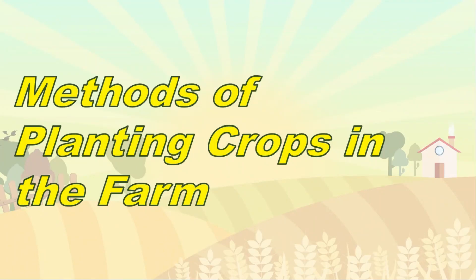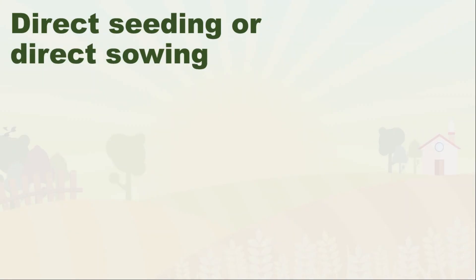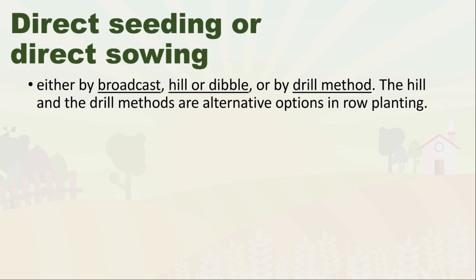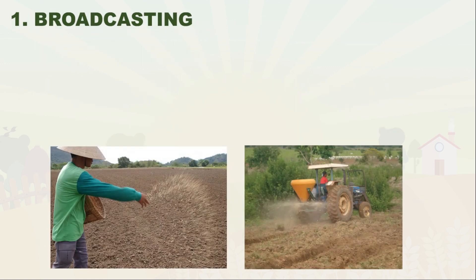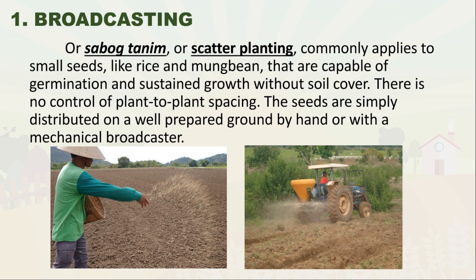The methods of planting crops in the farm can be performed by broadcasting, using hill or dibbling, or by the drilling method. The hill and drill methods are alternative options in direct planting — a method where seeds are directly planted on the ground. Broadcasting, commonly known as sabog tanim or scatter planting, applies to small seeds like rice and mung bean that can germinate without soil cover. There is no control of plant-to-plant spacing; seeds are simply distributed on a well-prepared ground by hand or with a mechanical broadcaster.